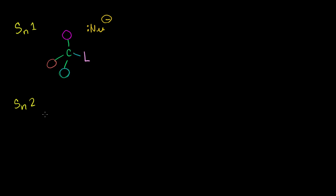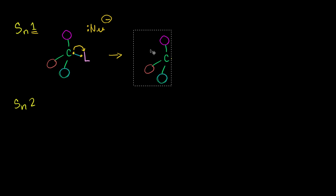In an SN1 reaction, the first step only involves one of the reagents — that's why it's called SN1. The nucleophile waits passively while the leaving group leaves. The leaving group swipes an electron from that carbon — it has to be reasonably electronegative. Once it does that, the carbon now has a positive charge, and the leaving group, which was neutral, now has a negative charge.